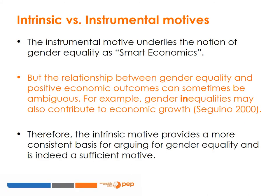While the instrumental motive underlies the notion that gender equality is smart economics, it is important to note that gender equality does not always lead to better overall economic outcomes. For example, there may be trade-offs between gender equality and economic growth. Seguino 2000 shows that in the short run higher female wages can be contractionary, a point further elucidated in the module on trade. Therefore, while the instrumental motive has proven successful from an advocacy point of view, the intrinsic motive provides a more consistent basis for arguing for gender equality and is indeed a sufficient motive.